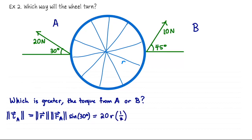I didn't actually give you the radius because it's not going to matter. So whatever the radius is, times 20 newtons times sine of 30, which is one half. So the magnitude of the torque due to the force being applied by person A is 10 times the radius of the wheel.